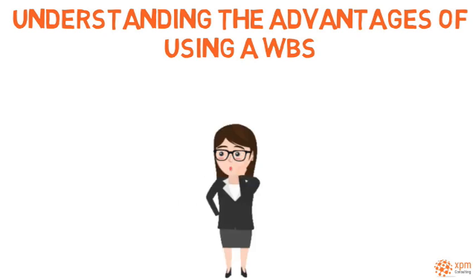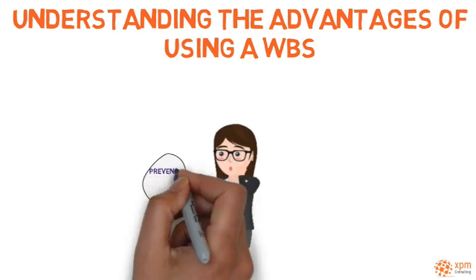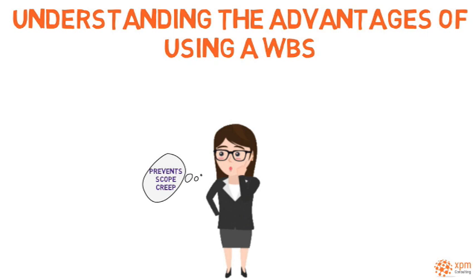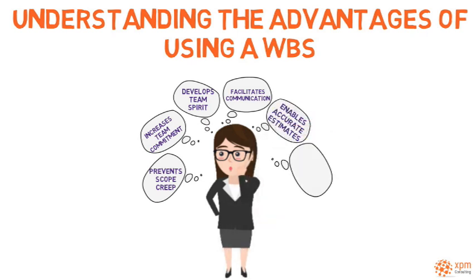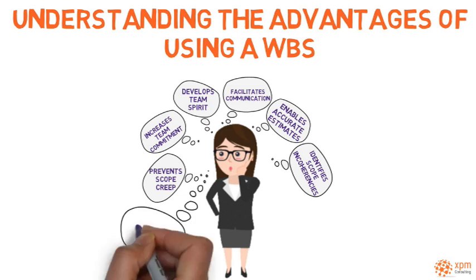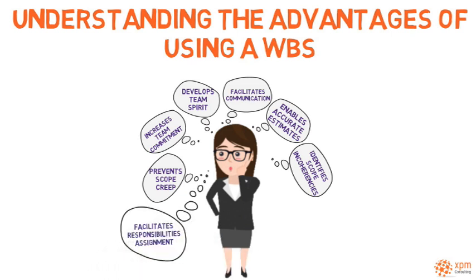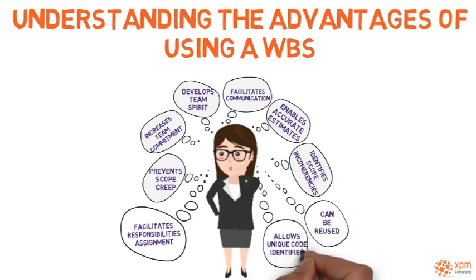There are many advantages of using a WBS. It prevents scope creep by clearly defining the required work. It increases the team's commitment to the plan and develops team spirit because the team is involved in the WBS creation. It facilitates internal and external project communication, enables more accurate estimates, and identifies scope and coherencies. It also facilitates responsibilities assignment, can be reused through WBS templates, and allows a unique code identifier to be assigned to each work element to facilitate reporting and reusing historical information.